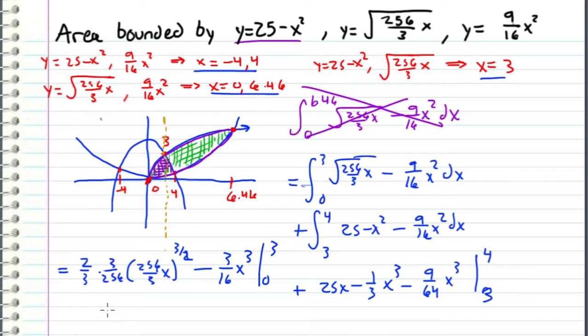And when we evaluate this, we get 26.938 minus 0 from this first expression, and then plus 69.667 minus 62.203. And I got this from using a calculator.